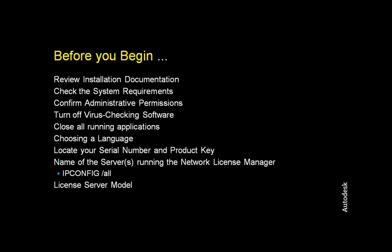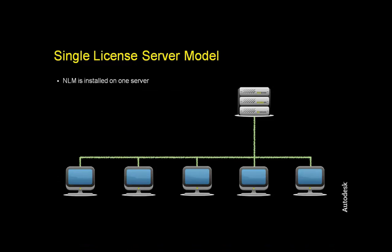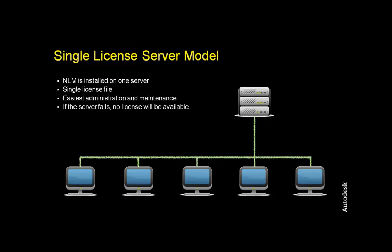There are three server model options: single, distributed, or redundant. If you choose the single license server model, be aware that the license manager is only installed onto one server. You obtain a single license file. It's the easiest method to administer and maintain the server environment. However, if the server fails, no licenses will be available.